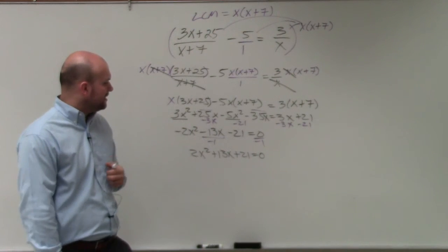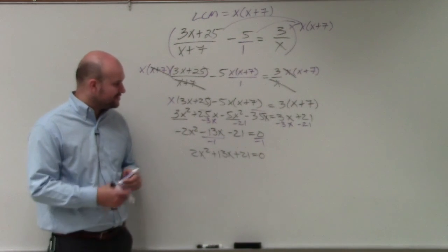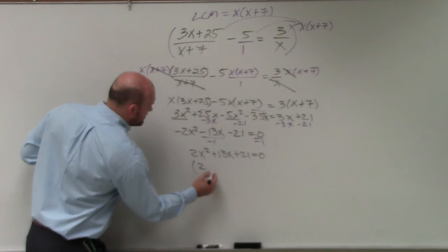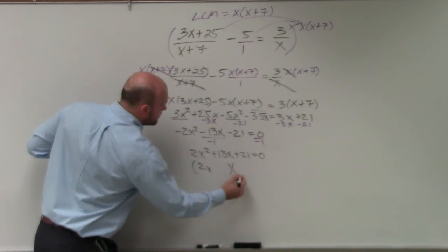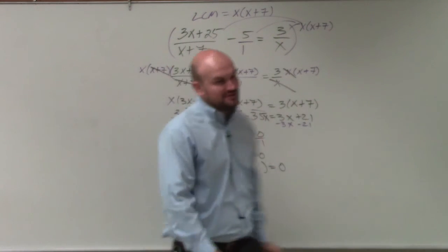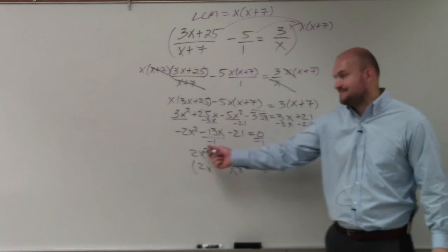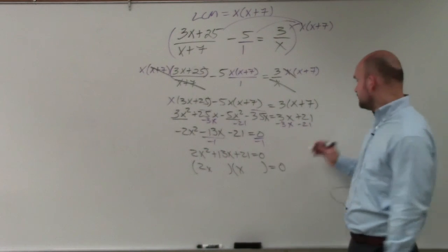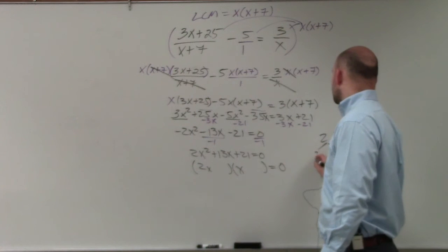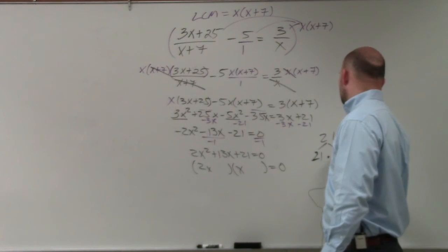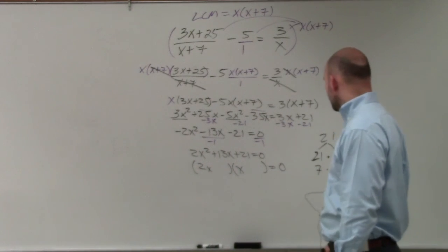Now this brings into again a factoring technique which is a little bit different in this case, but we want to determine our factors. Notice that my factors now start with 2x and x because they have to multiply to give me 2x squared. So I just need to figure out what factors multiply to give me 21.